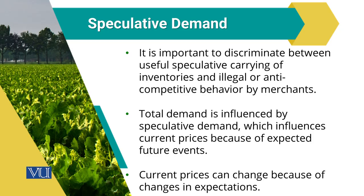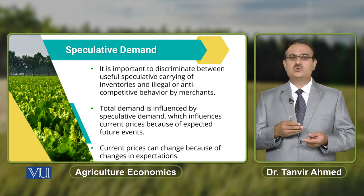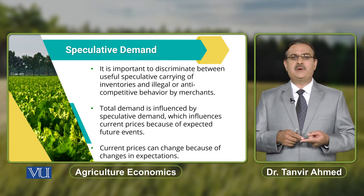Speculators do not always get profit. In real life, it is possible that a speculator bears losses, because speculation involves risks. A speculator may have expected that future prices would increase due to a lower crop, but if the future crop turns out to be normal, the speculator is not in a position to sell the commodity at a higher price in the future time period. So whenever we discuss speculation, we must differentiate between useful speculation and illegal or anti-competitive speculation.